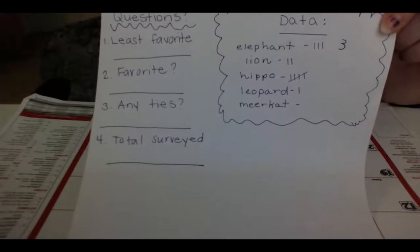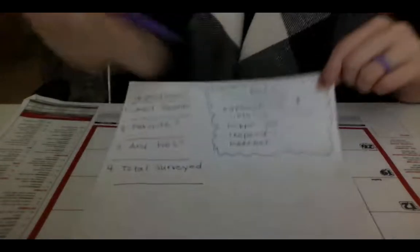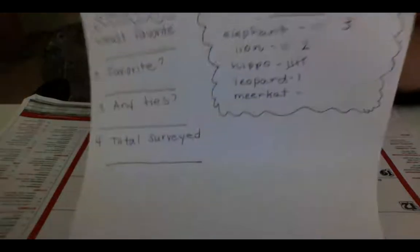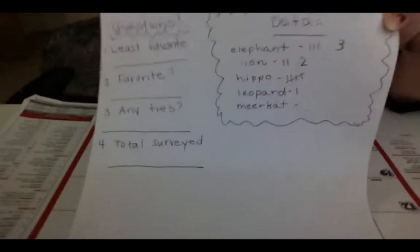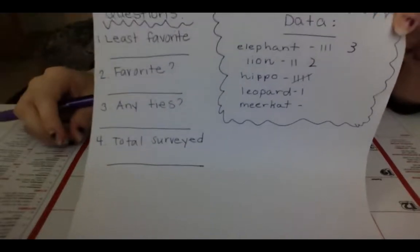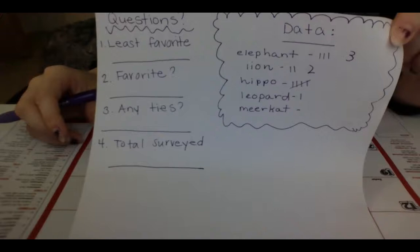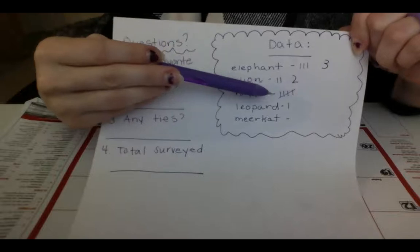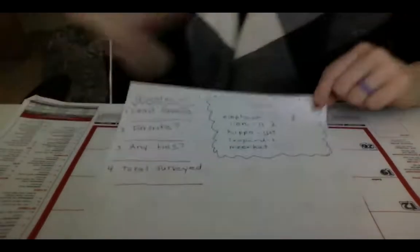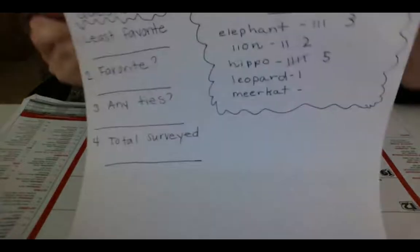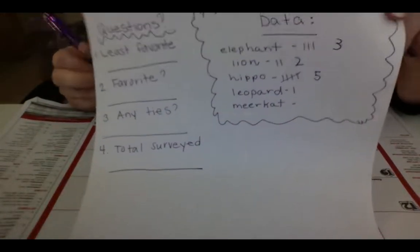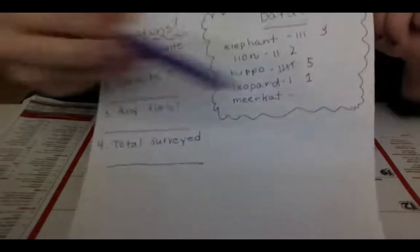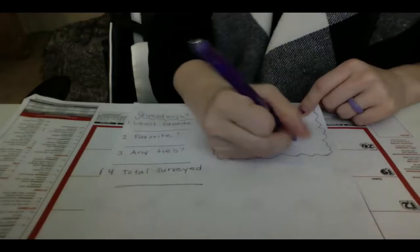How many people liked lions the most? One, two — two people liked lions the most. Now this is no surprise to us living in Cincinnati with baby Fiona at our zoo. How many people liked hippos the most? Instead of counting individually, take advantage of the bundle and skip count: five, and no additional — five people prefer the hippo. Leopard got one sad little vote. And meerkat? Unfortunately, meerkat got zero votes.